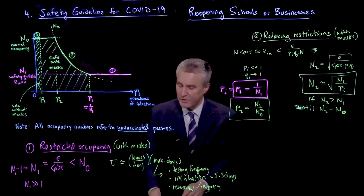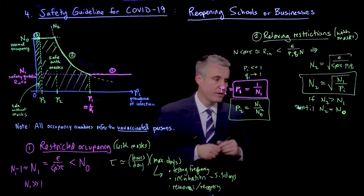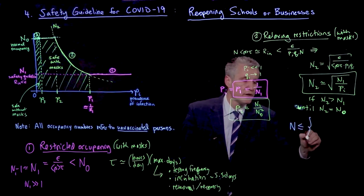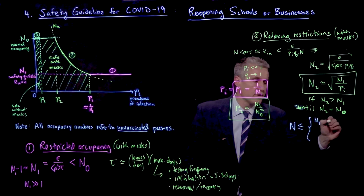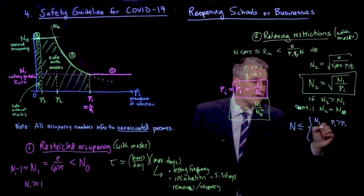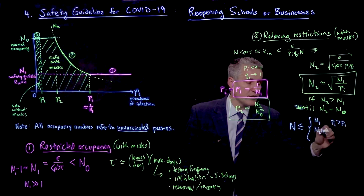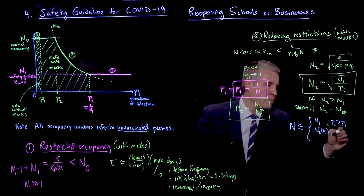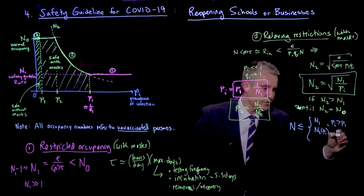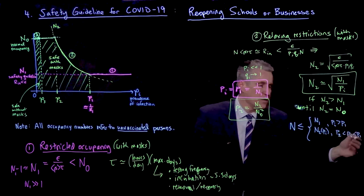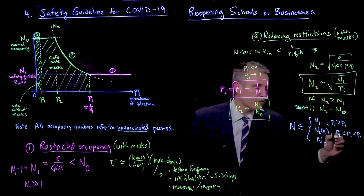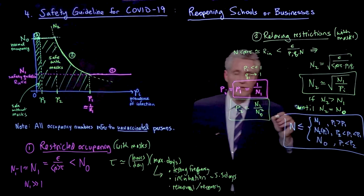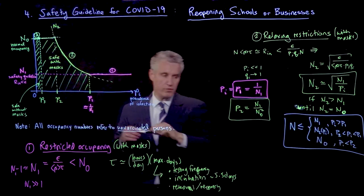So maybe to summarize here, what I would say is that the occupancy should be less than or equal to n1 for pi greater than p1. It will be n2, which depends on pi, for pi between p2 and p1. And then as the prevalence gets lower, we go to full occupancy n0 when pi is less than p2. So this is basically this full curve of reopening.